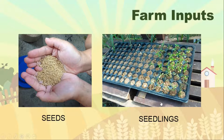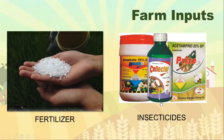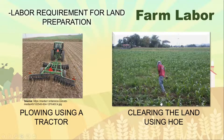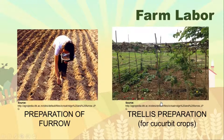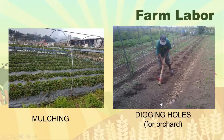Ang farm inputs, halimbawa, ay ang mga seeds, seedlings, fertilizers, and insecticides. While farm labor, halimbawa, ay ang labor requirement for land preparation — pag-araro gamit ang tractor, clearing the land, blowing, using animal harrowing, using hand tractor, preparation of a furrow, and trellis preparation for cucurbit crops. Ang trellis ay yung mga fence na ginagamit natin, at ang cucurbit crops ay yung mga gumagapang na halaman — halimbawa, melon, kalabasa, upo. We also have mulching, where the plants are covered with plastic cover or organic materials.